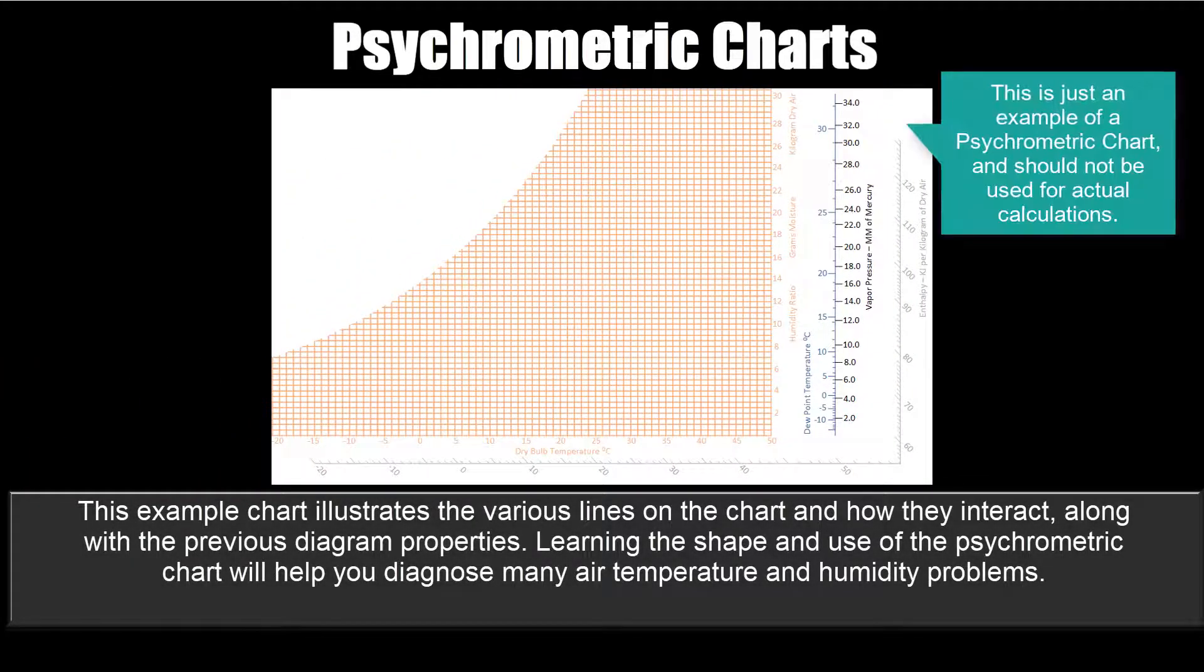This example chart illustrates the various lines on the chart and how they interact, along with the previous diagram properties. Learning the shape and use of the psychrometric chart will help you diagnose many air temperature and humidity problems.